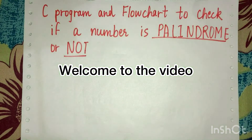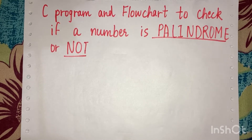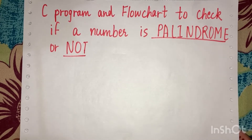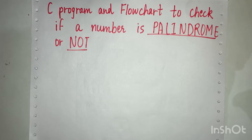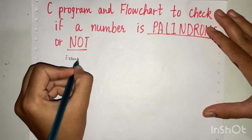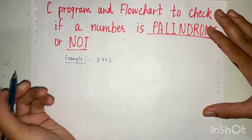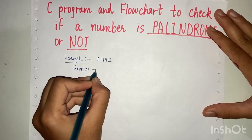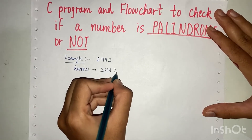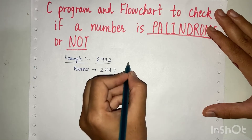Hi everybody, welcome to another video. In this video we are going to write a C program to check if a number is palindrome or not. We'll also draw the flowchart for the same code. A palindrome number is a number whose reverse is the number itself. For example, take the number 2442 — its reverse is again 2442, which equals the original number, so it is a palindrome number.